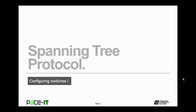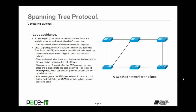Now let's move on to Spanning Tree Protocol. STP is a loop avoidance technology. A switching loop can occur on networks where there are multiple paths to reach destination MAC addresses. Digital Equipment Corporation created STP to reduce the possibility of switching loops. The switches elect a root bridge to control the switched network, and will shut down ports that are not the best path to the root bridge, thus reducing the risk of loops.